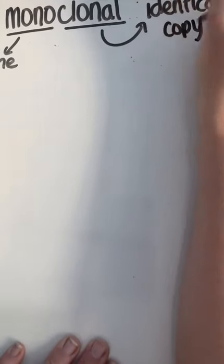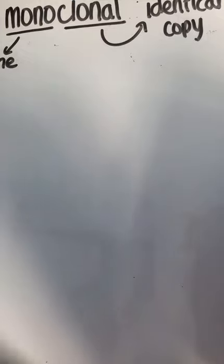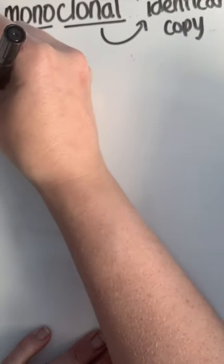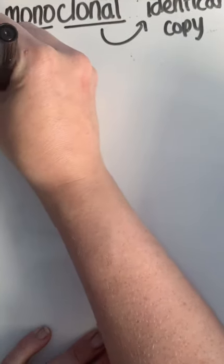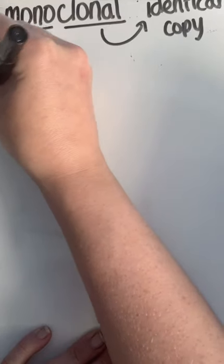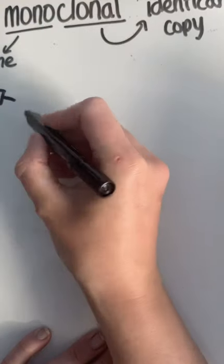Monoclonal antibodies are identical copies of one type of antibody. To understand how they are produced, we start with an antigen, which is going to be injected into a mouse.